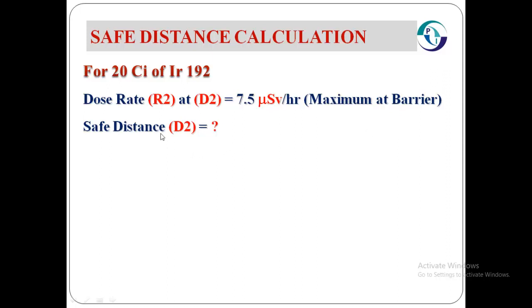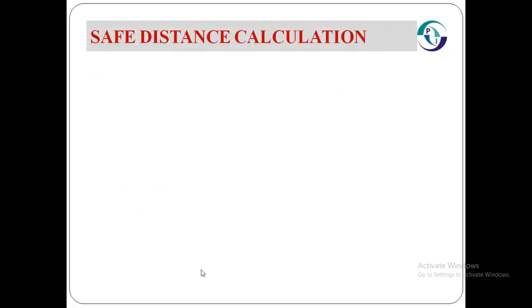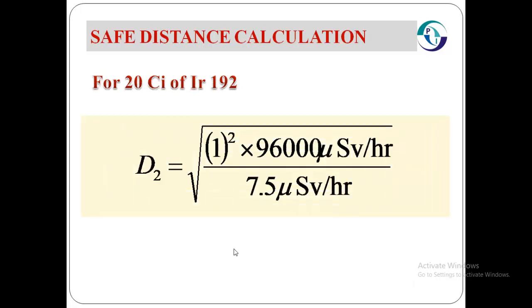We are interested to calculate the safe distance D2. Now R1 equals 96,000 microsievert per hour, R2 is 7.5 microsievert per hour, D1 equals 1 meter, and we need to calculate D2. To calculate D2, we will put all the data into the inverse square law equation and we will find the safe distance is equal to 113.14 meters.